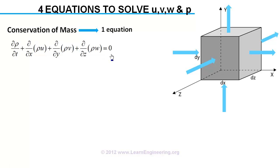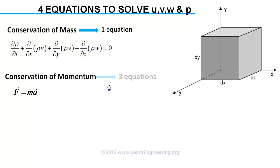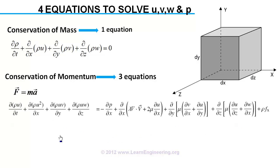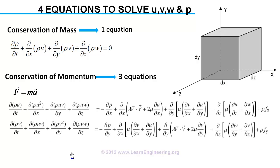Remaining three equations are derived from conservation of momentum, which is same as Newton's second law of motion. Since momentum is a vector quantity, there will be three components for it. It will generate three independent equations. It can be represented in differential form like this. For each direction there will be one equation.